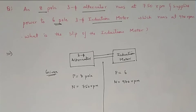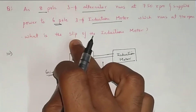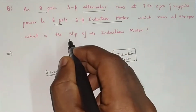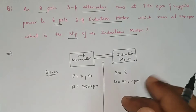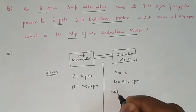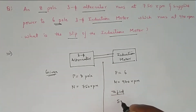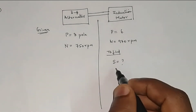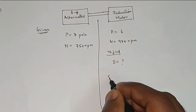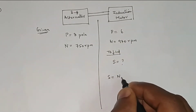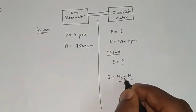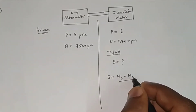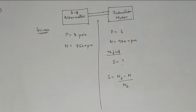Now they are asking us to find the slip of the induction motor, so we need to find that one parameter. After writing the given data, it is easy to find. The slip formula for an induction motor is: slip = (Ns − N) / Ns, where Ns is synchronous speed and N is actual speed.